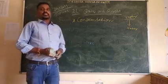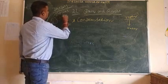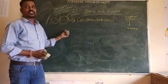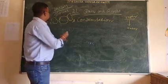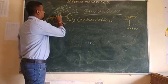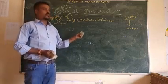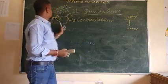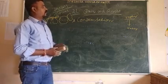Clouds are the tiny droplets of water hanging in the air above. The atmosphere is the air. These droplets of water gather together to form clouds. In this way condensation takes place.